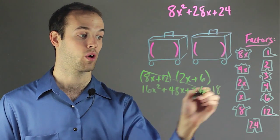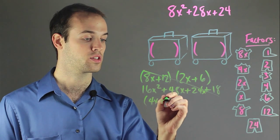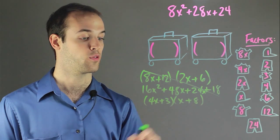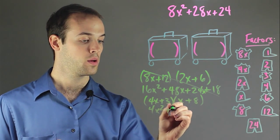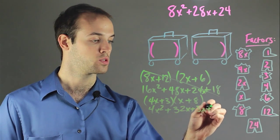So we know that this will not work. Now let's try another one. Let's try 4x plus 3, and x plus 8. Now if we foil that out, we're going to get 4x squared, plus 32x, plus 3x, plus 24.